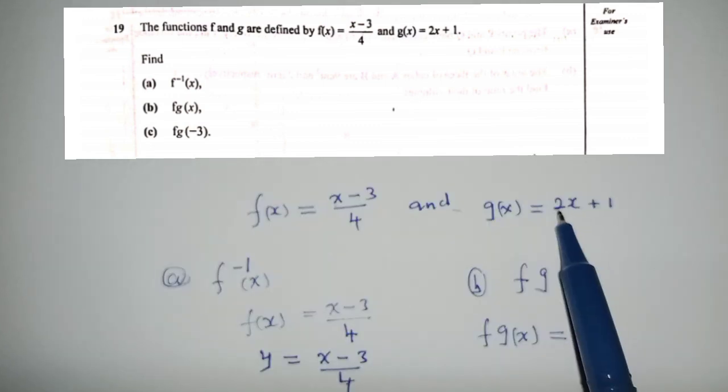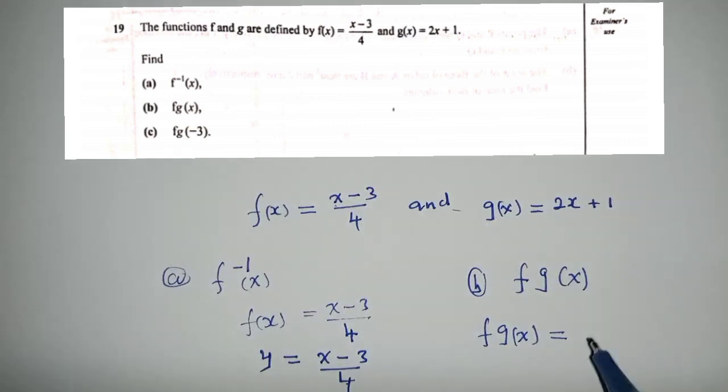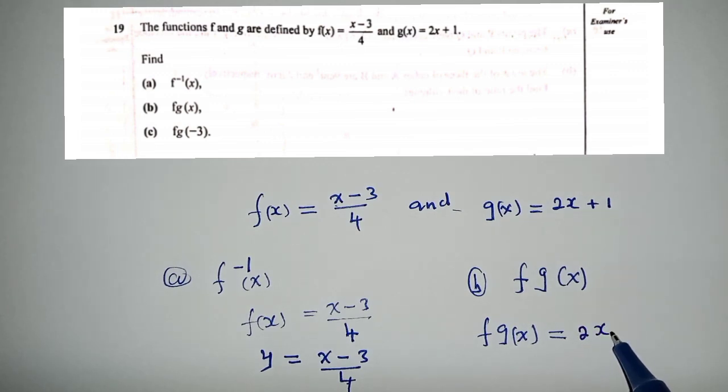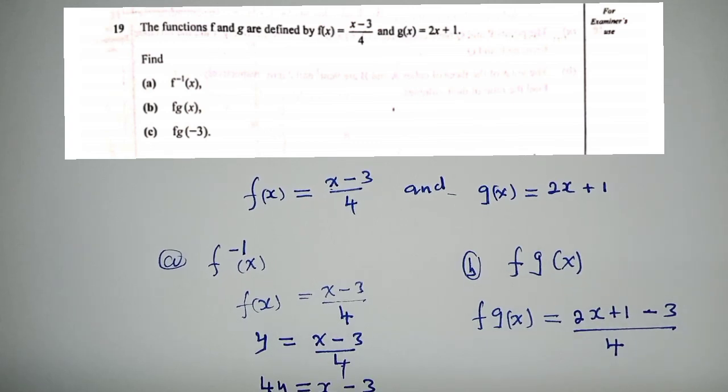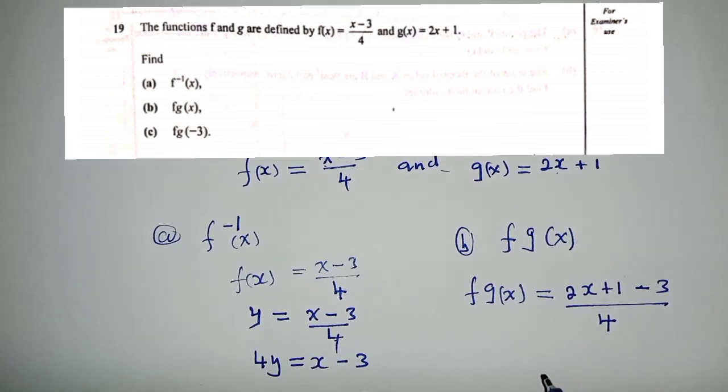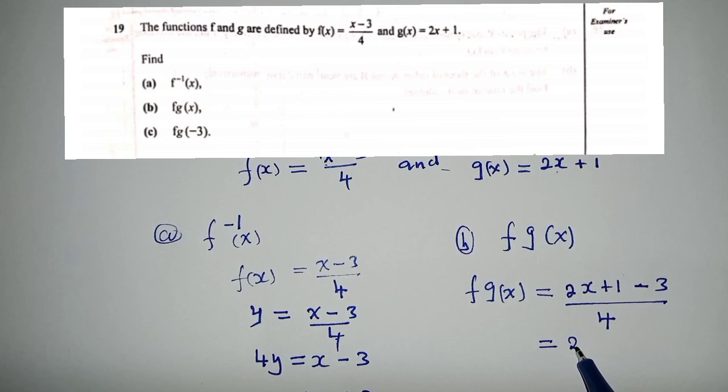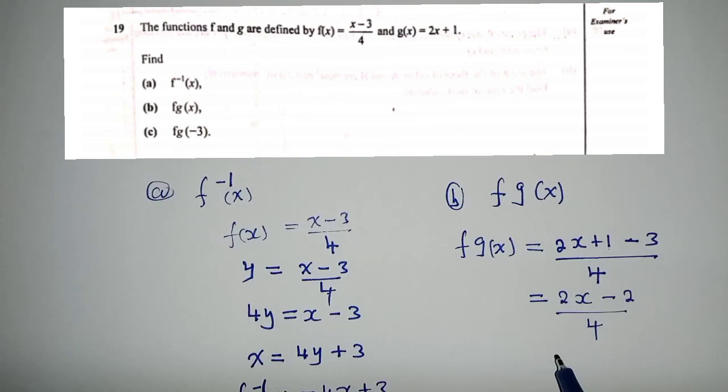So f(g(x)) will be equal to... you get this function over here and get the other one, put it where x is. Put it where this x is. So it will be (2x + 1 - 3) / 4. I've just gotten this function and put it where x is.